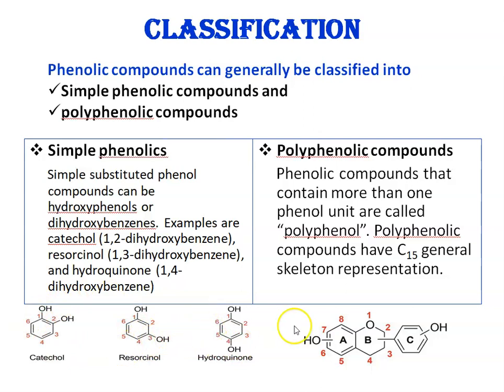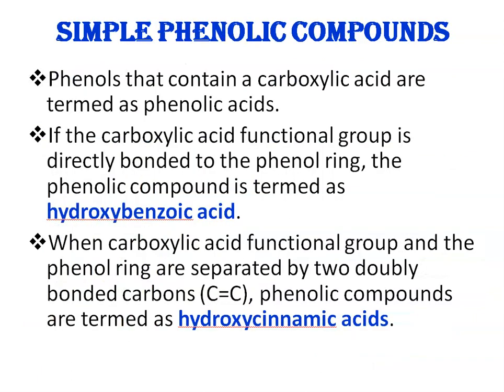Polyphenolic compounds are compounds that contain more than one phenolic unit, and they are called polyphenolic compounds. They have a carbon-15 general skeleton representation. Now, turning to simple phenolic compounds first.